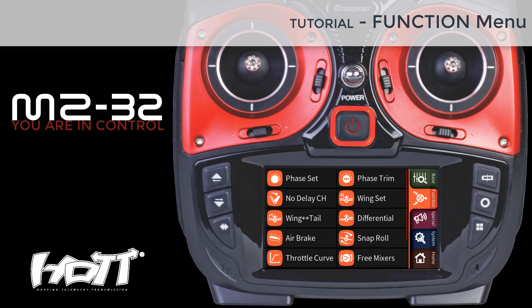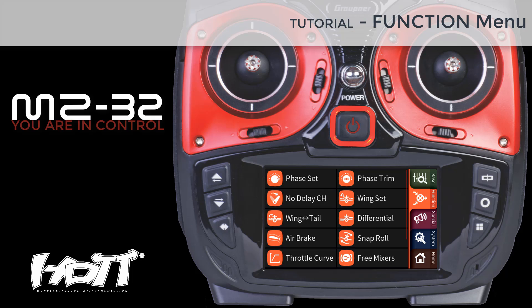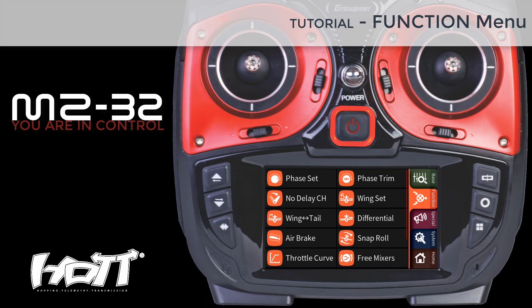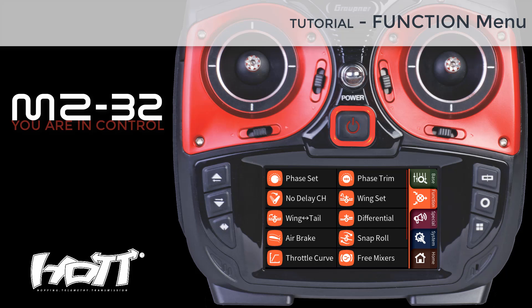In the Function menu you will be setting up your flight phases, wing mixes, throttle or pitch curves, and optional snap roll or channel sequencer. As with the base menu, we will be following a structural sequence which should help you with completing your model setup in an easy manner.